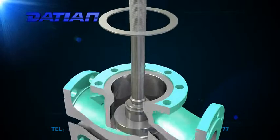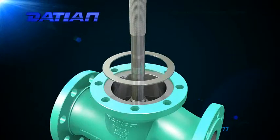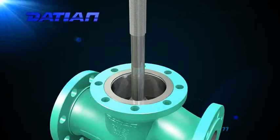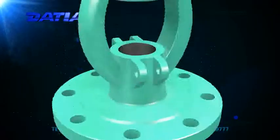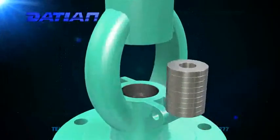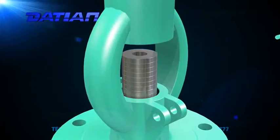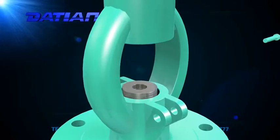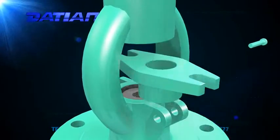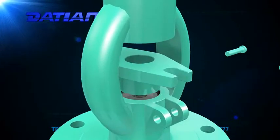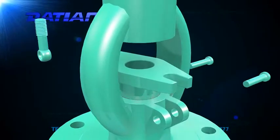8. The large diameter high pressure global valve is designed with a double disc seal structure, high input and low output, with a relief hole structure, making operation labor-saving and easy to seal.